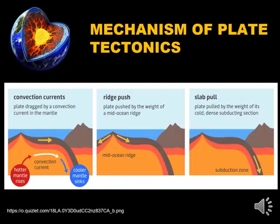Ridge Push: hot, buoyant mantle lifts and pushes the plates apart at mid-ocean ridges, where magma solidifies to form oceanic lithosphere. Gravity pulls the oceanic plates downhill from the ridges towards the deep ocean trenches, or downhill from uplifted continental rift zones like the East African Rift. Slab Pull: relatively cool and dense oceanic plates, or slabs, have negative buoyancy after subducting at ocean trenches and sink into the ductile, less dense asthenosphere, pulling the rest of the tectonic plates along behind it.